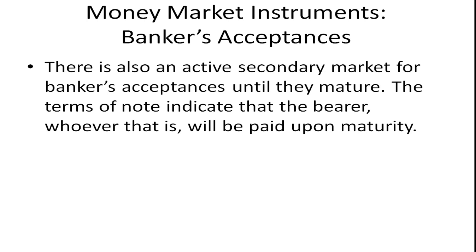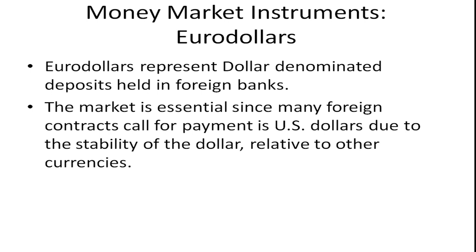There's also an active secondary market for banker's acceptances until they mature. The terms of the note indicate that the bearer — whoever that is — will be paid upon maturity. Bearer bonds mean that no one's name is on the bond; the person who happens to have it, it's as good as cash. Bearer bonds pop up a lot in movies — for example, in the movie Die Hard, the thieves were looking to steal bearer bonds worth about a million dollars, because stealing them is essentially like stealing cash.